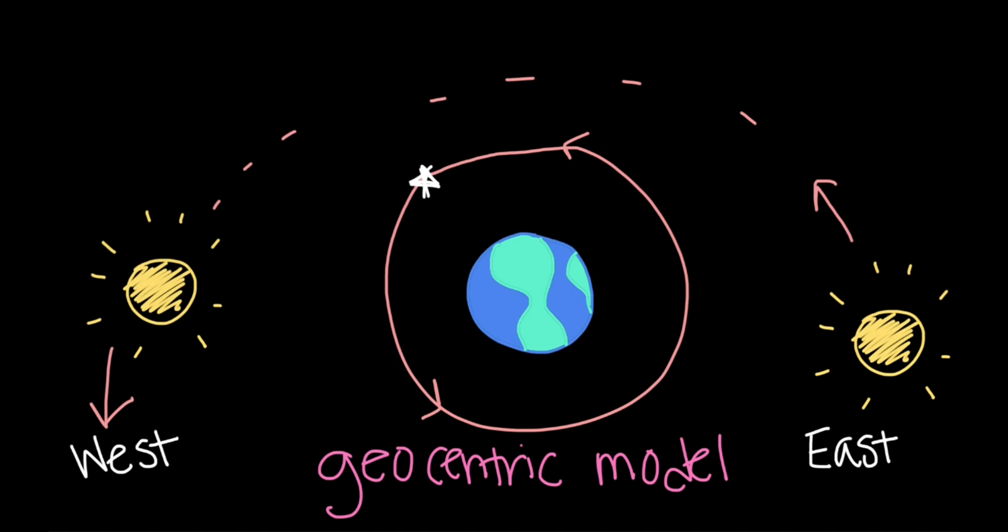This geocentric model was quite good at explaining a lot of the things that we see in the sky, like the apparent motion of the Sun and the stars. But there were issues with this geocentric model. For example, the motions of other planets in the sky. A planet like Jupiter might sometimes move backwards in the opposite direction, which isn't really very well explained by this geocentric model.